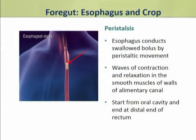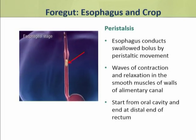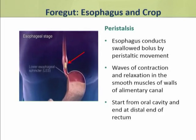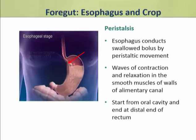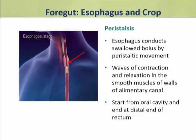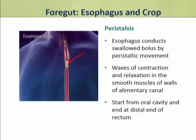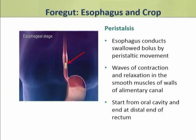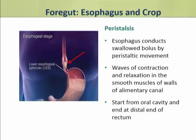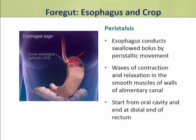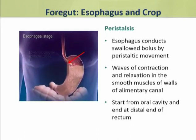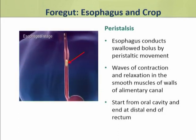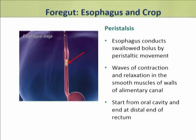Peristalsis involves waves of contraction and relaxation in the smooth muscles of the walls of the alimentary canal. The process of peristalsis starts from the buccal cavity or pharynx and ends at the rectum.